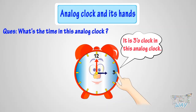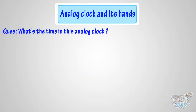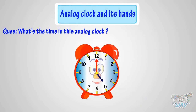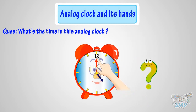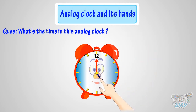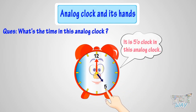Next example. Can you tell me what's the time in this analog clock? When the minute hand is at 12, it is time to the hour. But to which hour? The hour hand tells the hour, and the hour hand is pointing at 5 here. So it's 5 o'clock in this analog clock.